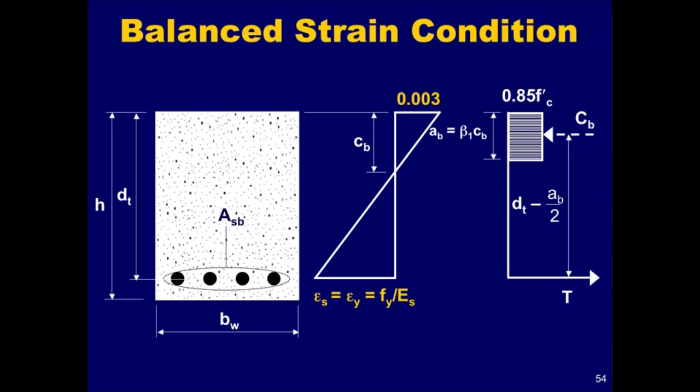A balanced strain condition exists at a cross-section when the maximum strain in the extreme compression fiber of the concrete just reaches 0.003 simultaneously with the yield strain in the reinforcement. This condition is illustrated in this figure, where the appropriate variables now have the coefficient B to identify the balanced condition. Also note that the distance from the extreme compression fiber to the centroid of the extreme layer of the longitudinal tensile steel is designated as D sub T. With only one layer of steel, the distance D sub T is the same as the distance from the extreme compression fiber to the centroid of the longitudinal tensile steel, which is usually designated as D.